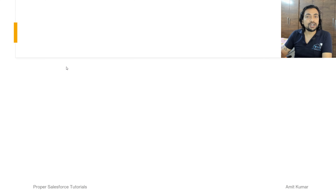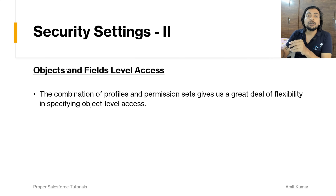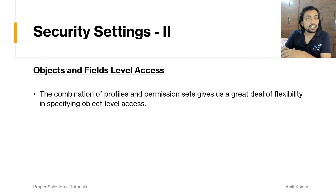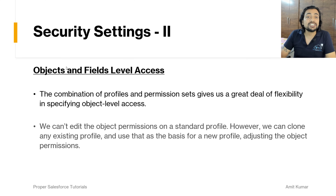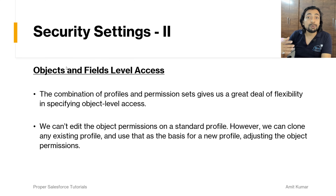Remember, a secure organization starts with precise access control. Let's focus on controlling access at the object and field level. For object level and field level access, we can take help of profiles and permission sets. With profiles and permission sets, we can specify what sort of access a specific profile or permission set has on the object level and also on the different fields of that specific object.